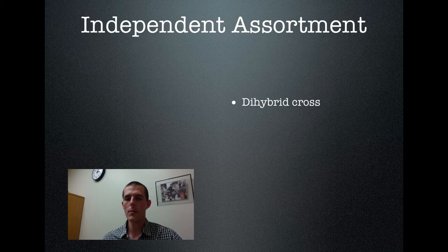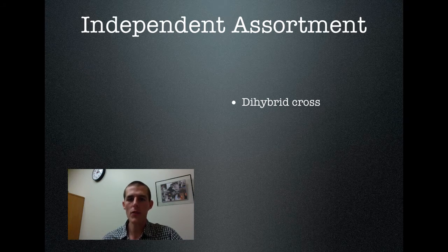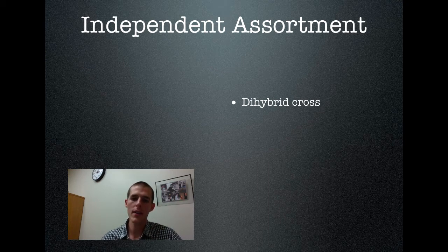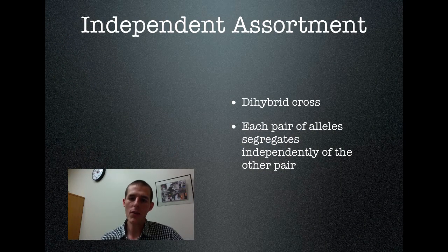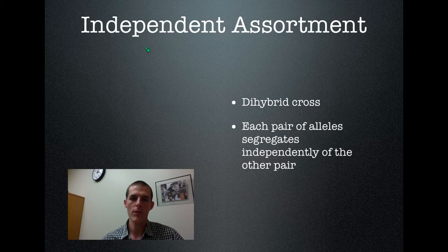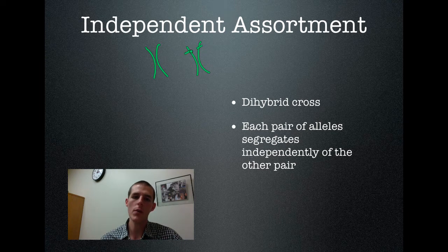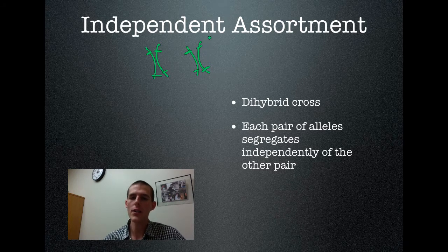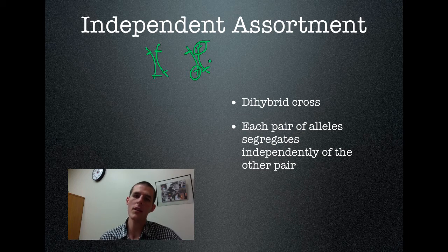Let's talk about independent assortment. Independent assortment describes the behavior of alleles when you're doing a dihybrid cross — remember, dihybrid crosses track two traits, such as pea color and the shape of the pea pods. In a dihybrid cross, each pair of alleles segregates independently of the other pair. So if you have genes for pea pod color at one location on a chromosome and genes for pea pod shape at another location, where the genes for pea pod shape go does not affect where the genes for pea pod color go — they sort out independently from each other.